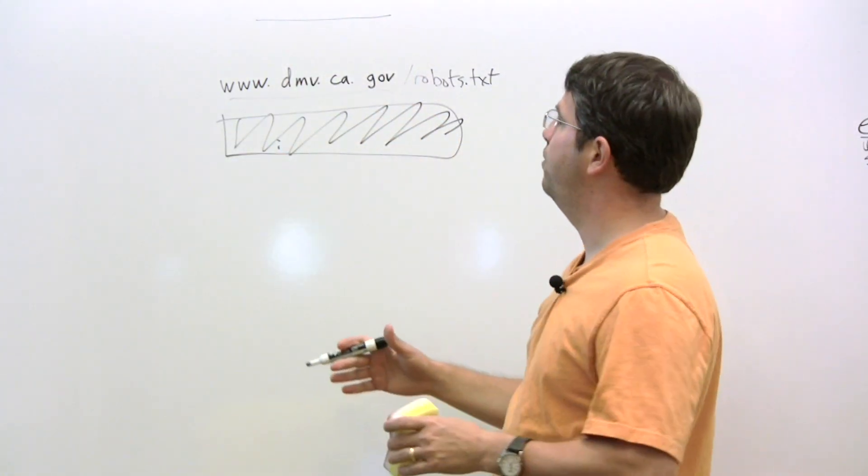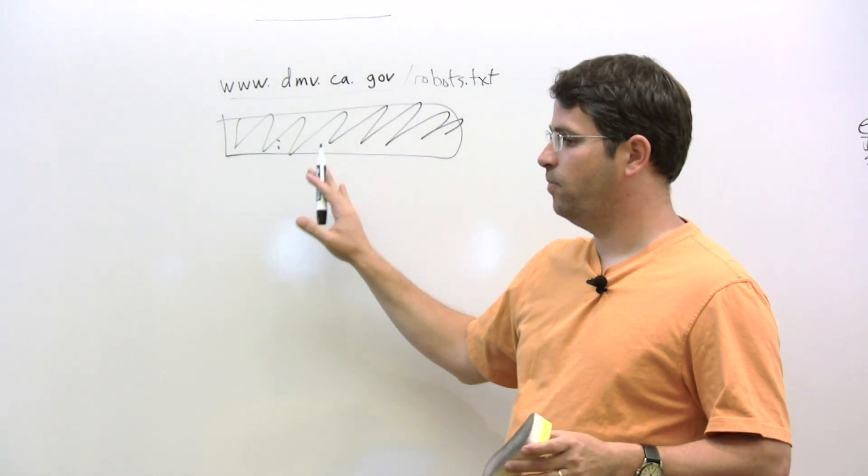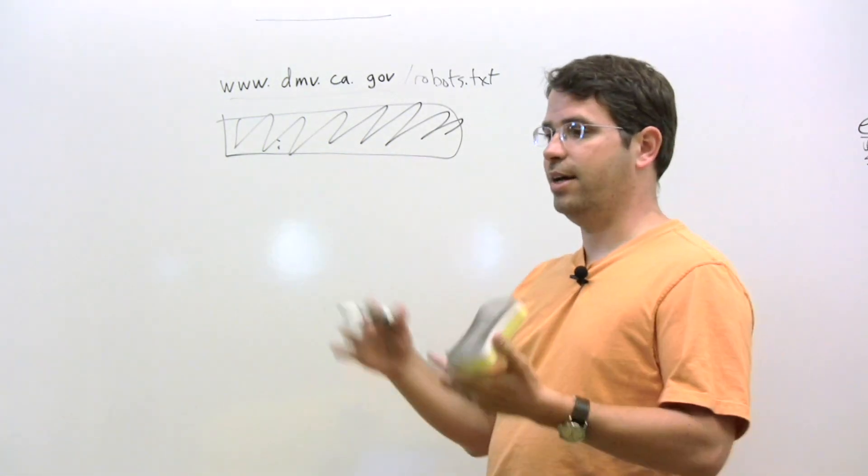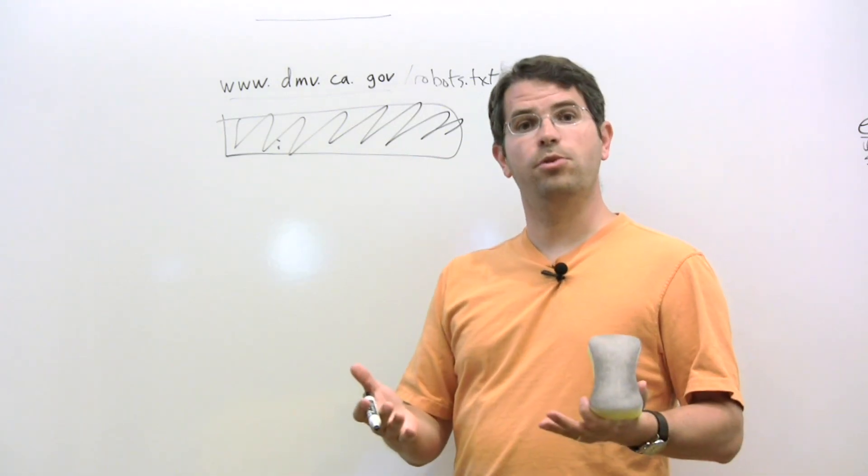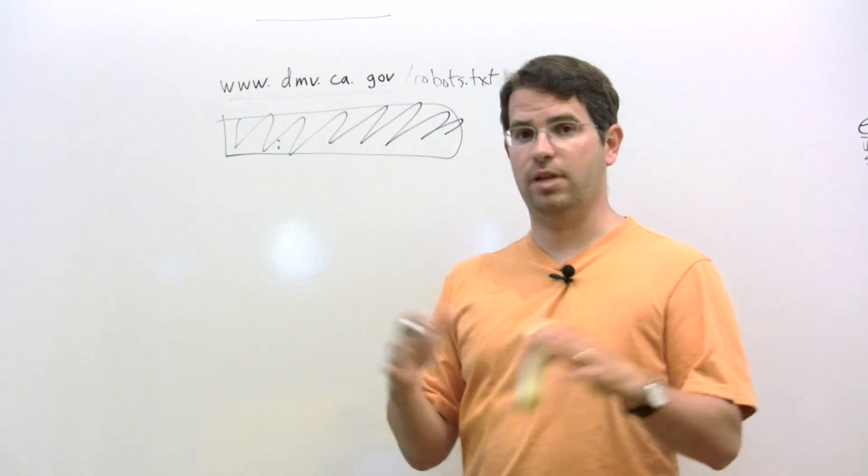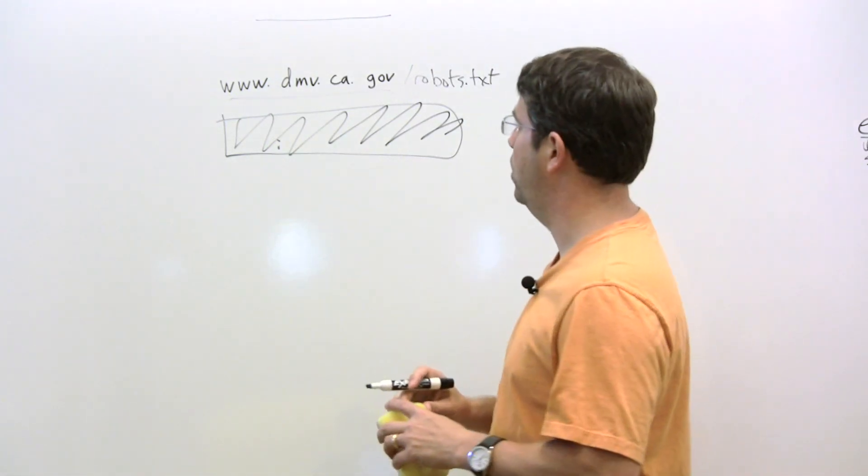Another option you have is you can use the URL removal tool. So if you block a site completely in robots.txt, then you can use the URL removal tool and remove an entire site from Google's index, and then it will never show up in that way as well.